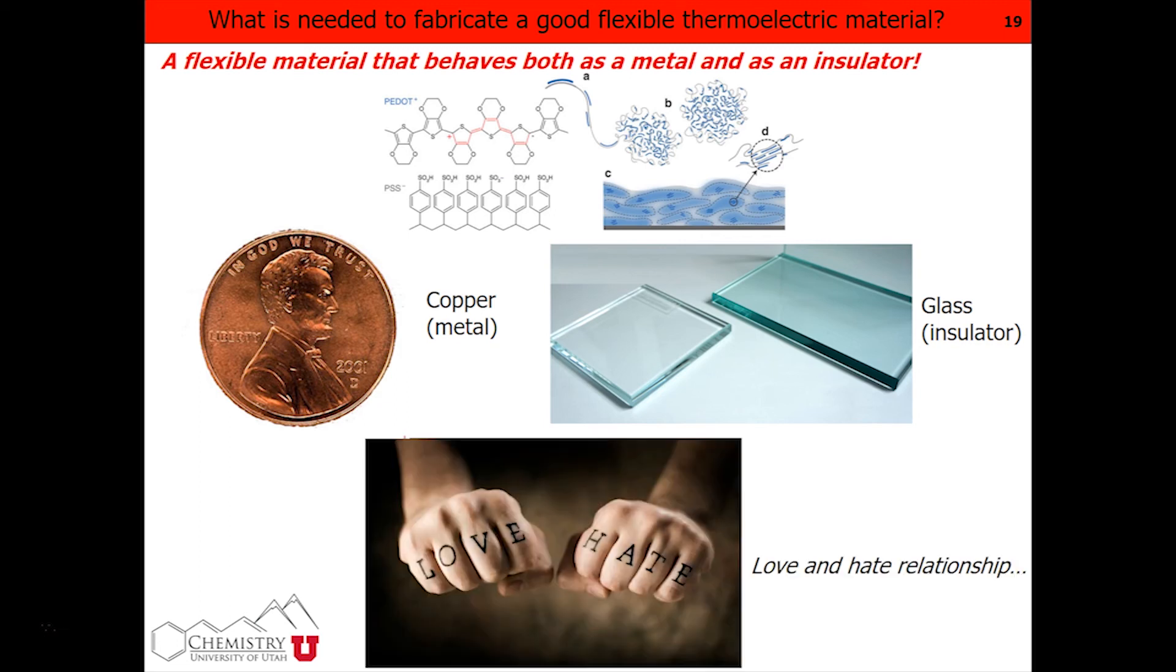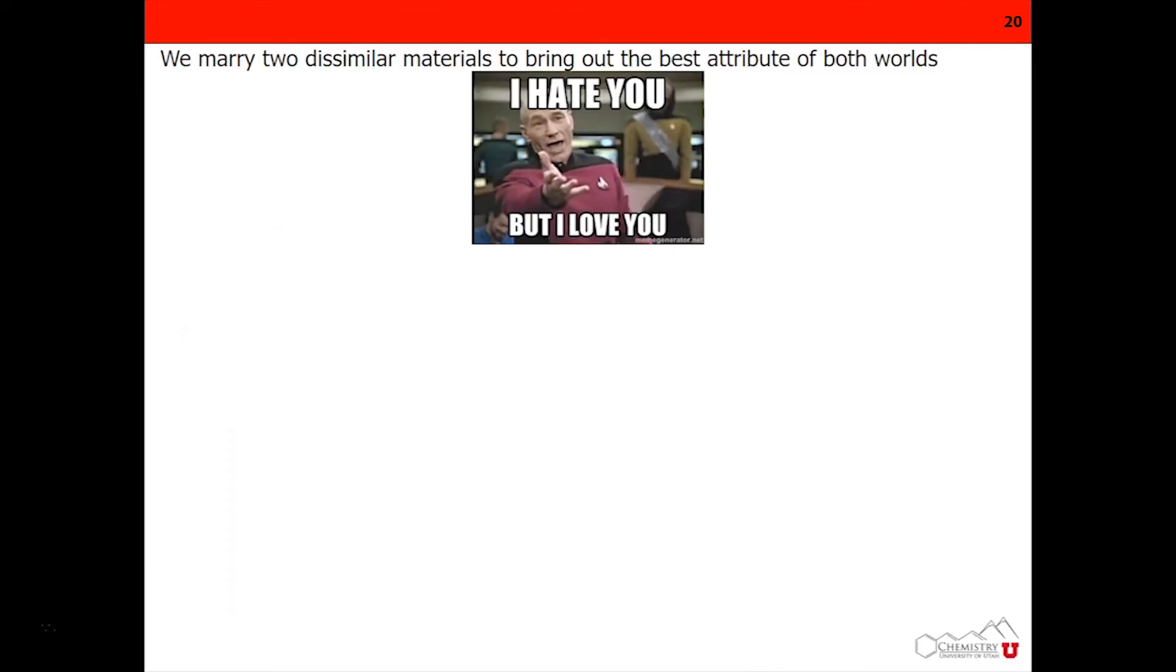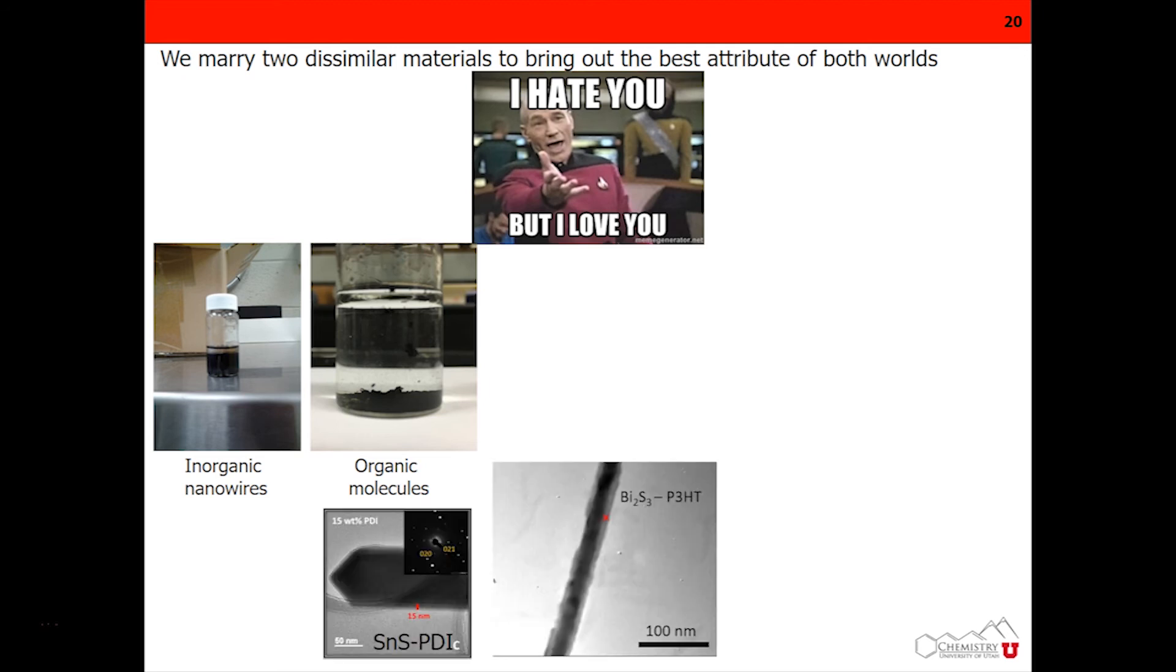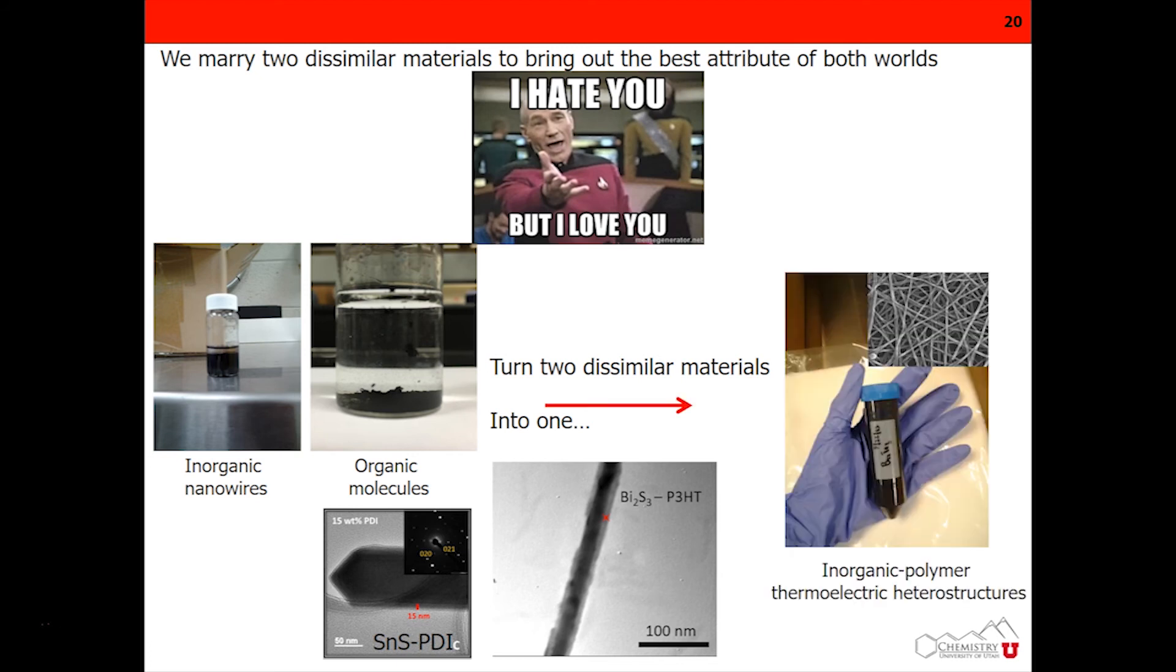What we do is we want a material that behaves both as a metal because it has to conduct electrons, and as an insulator at the same time because we don't want it to conduct phonons. That is the trick. It's basically a love and hate relationship. We have these inorganic nanowires that are really good at conducting electrons, and we pair them with organic molecules that are really good at blocking phonons. We make these two dissimilar materials that don't like each other because they will separate, and we force them and marry them. We're like, you guys are going to stick together. We have these inorganic-organic heterostructures that are actually pretty good at converting heat into electricity.